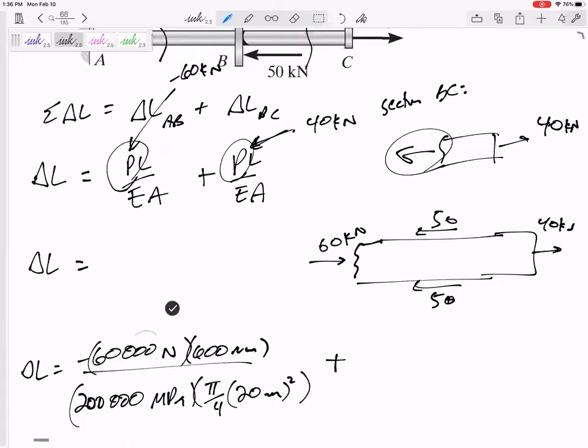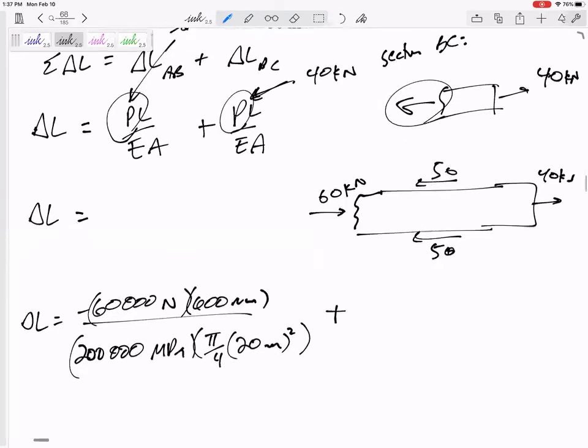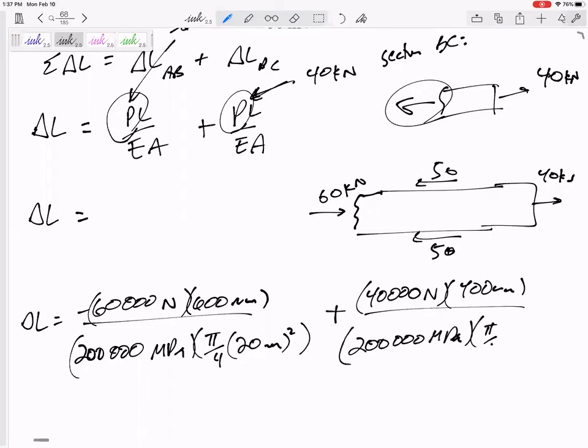So y'all smarter than me, maybe you just left kilonewtons and GPa. Those would be fine. But I prefer newtons, MPa, and millimeters squared. All right, the next one. 40,000 newtons. Its length is 400 millimeters over E, 200,000 MPa, and pi by 4, 20 squared.